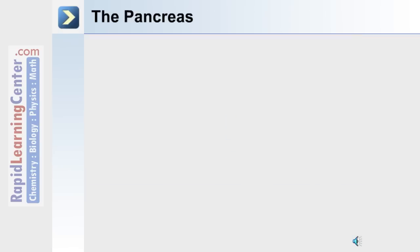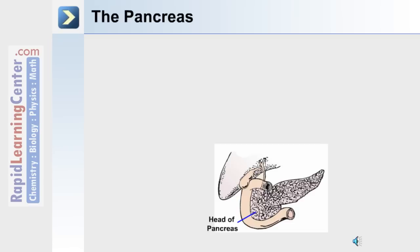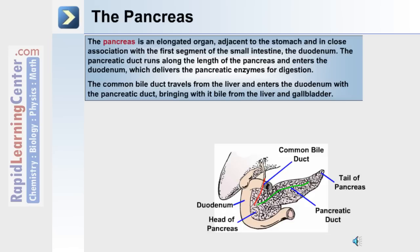The third accessory organ of the digestive system is the pancreas. Anatomically, the pancreas is made up of a head and a tail, and it's connected to the duodenum through the common bile duct from the gallbladder. The pancreas itself has its own pancreatic duct, which runs along the length of the pancreas and enters the first part of the small intestine, the duodenum. The common bile duct travels from the liver and enters the duodenum with the pancreatic duct, bringing bile from the gallbladder and liver.